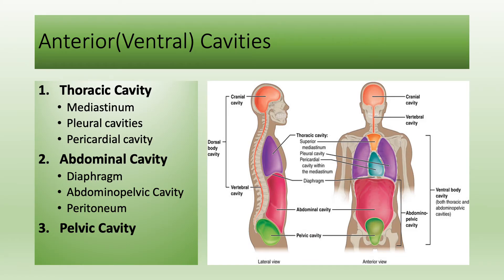We have three anterior cavities from top to bottom: thoracic, abdominal, and pelvic cavities. We know the thoracic cavity as the chest or thorax. It contains the lungs, heart, big blood vessels, trachea, and esophagus.